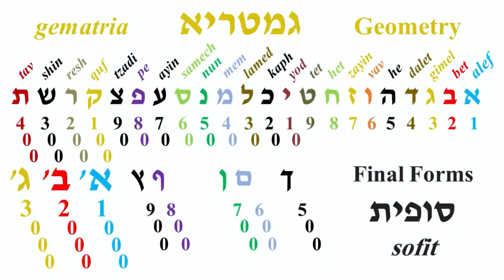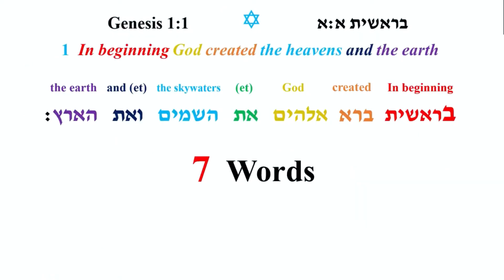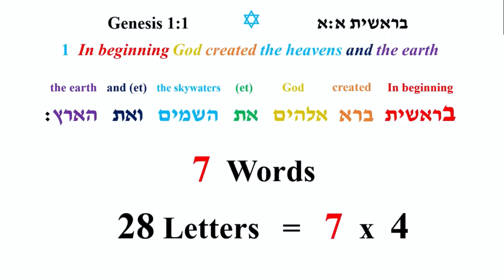We're going to look now to Genesis 1:1, because the title of this video again is Silencing Objections. We're probably going to title it 'More Miracles in Genesis 1:1' or something around that nature. In Genesis 1:1 we have 7 words. And those 7 words, if you count them from the Bet all the way to the Sadi, is 28 letters. 28 is divisible by 7 — 7 times 4 is 28.